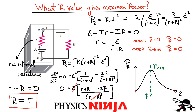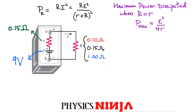The result is that the load resistance R must equal the internal resistance r of the battery to obtain maximum power dissipation. That is the impedance matching condition. Let's now verify this with a numerical example.